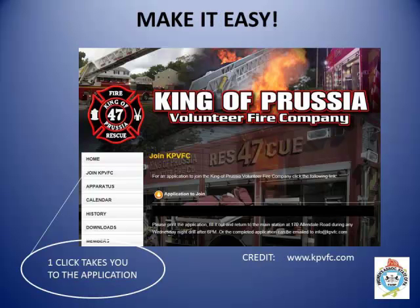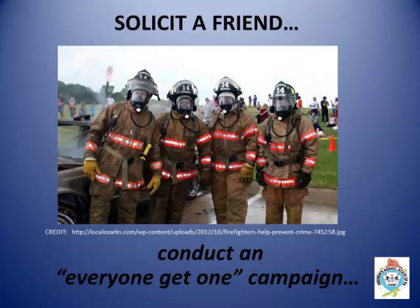Don't make it difficult for prospective members to obtain information. Have a website with membership information, including the requirements and an application. Advertise the web address on all of your apparatus. Have applications ready and available at the fire stations, in a night box. One of the most effective ways to learn about resources, groups, and support systems is to ask your members.